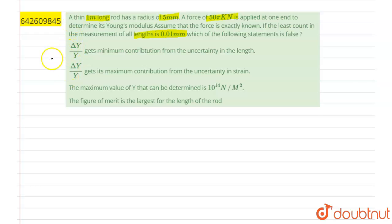See option A: delta Y over Y gets minimum contribution from the uncertainty in length. Option B: delta Y over Y gets maximum contribution from uncertainty in strain.